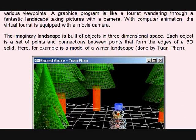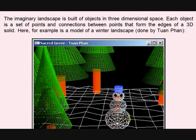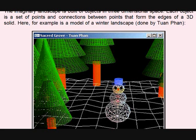The imaginary landscape is built of objects in three-dimensional space. Look, each object is a set of points. Every tree, everything is nothing but a set of points and connections between the points.